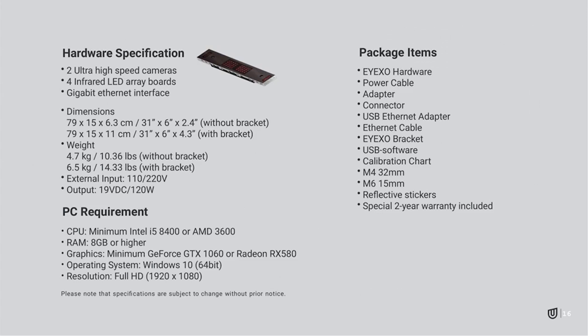Regarding specifications, one thing that really stood out is that there are four infrared boards on this unit — not just in the center but on the outside as well. It has a gigabit interface so data can move as fast as possible. The unit is very small — just over four inches with the bracket, and only 14 total pounds including the bracket, with the unit itself weighing just 10 pounds. It's significantly smaller than the QED.